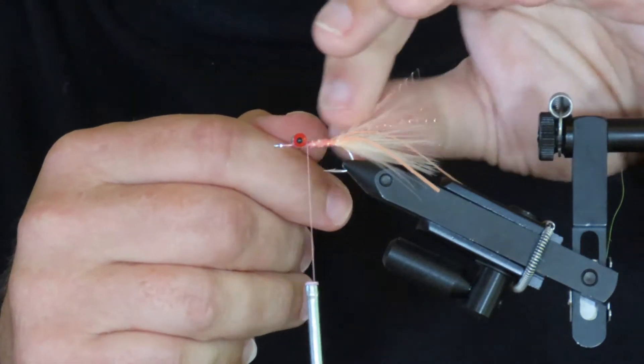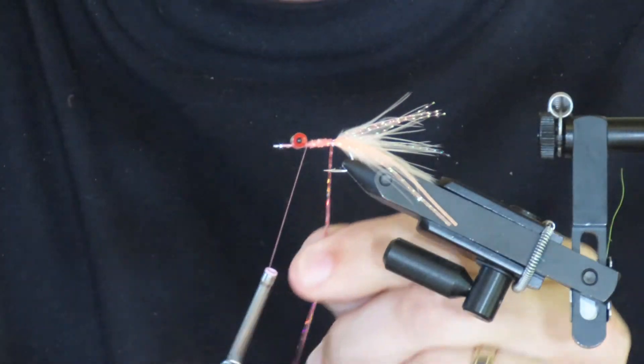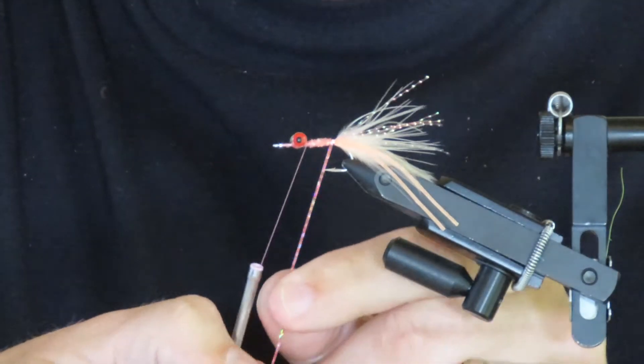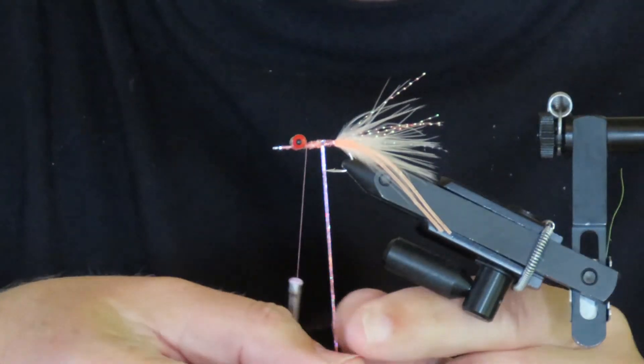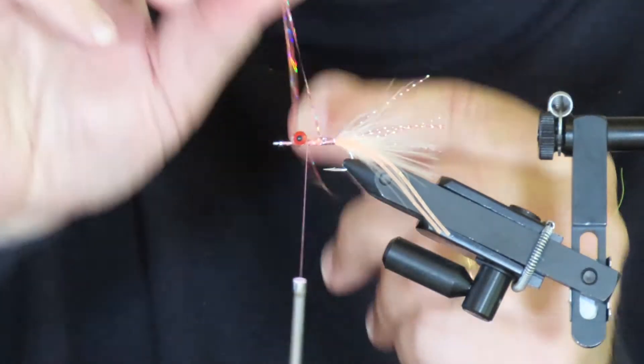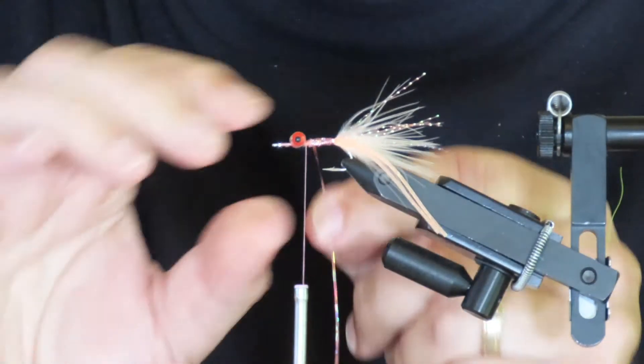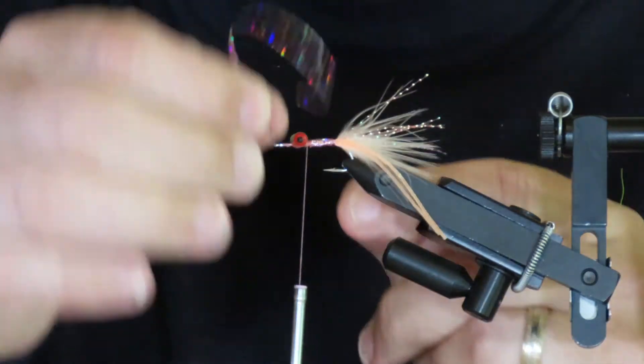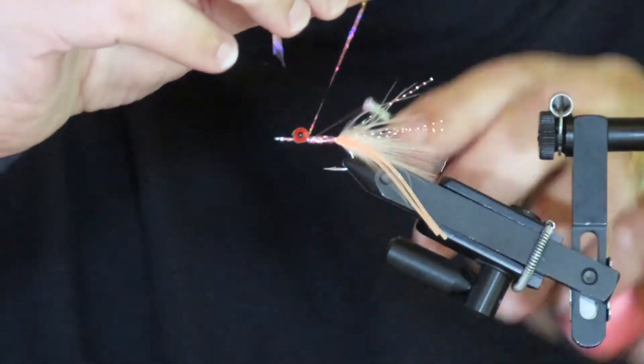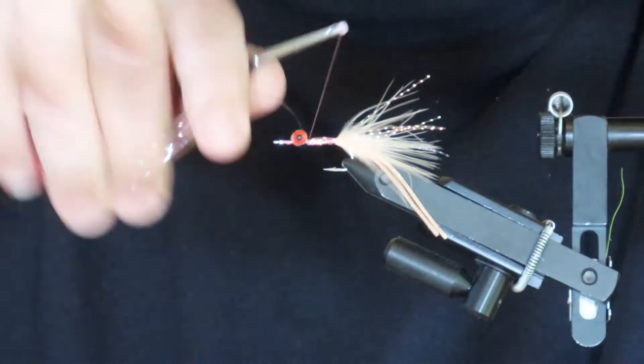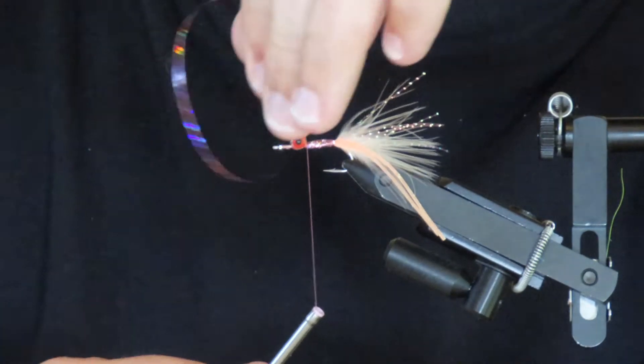Now go back and grab your tinsel, and make sure that you don't trap anything. Make a single turn around the tie-in point, and then wrap in overlapping turns all the way back to just behind the eyes. That's it. Trap the tinsel with a few tight turns front and back, make sure it's locked in, and trim off the excess.